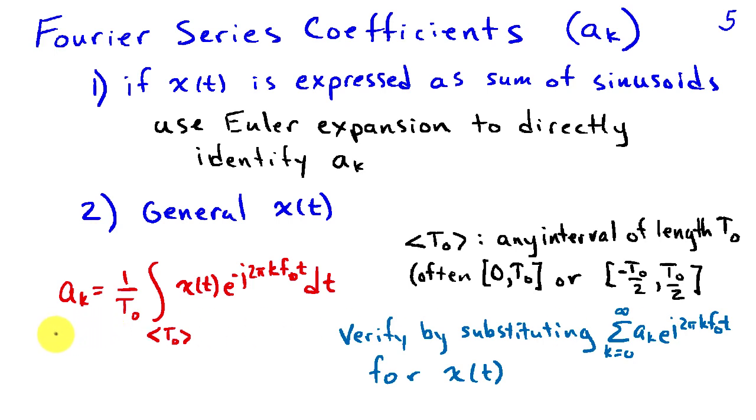Now this expression is something that we're not going to derive. You can verify that the expression works by replacing x(t) with the Fourier series representation, the sum k equals zero to infinity, aₖe^(j2πkf₀t). If you substitute for x(t) in the integrand and carry out the integration, you'll get aₖ equal aₖ.